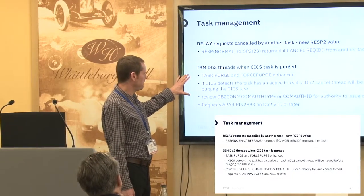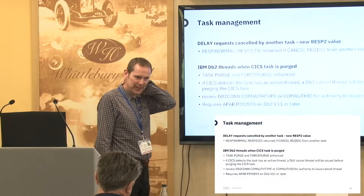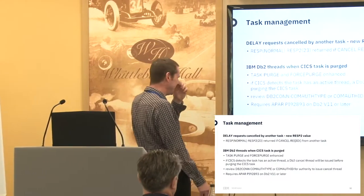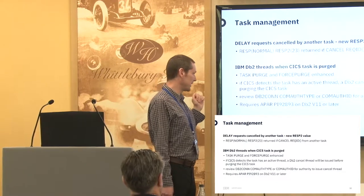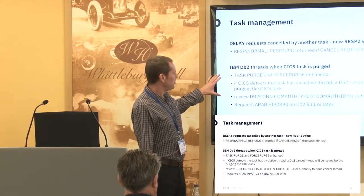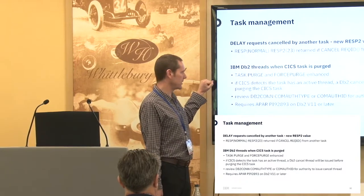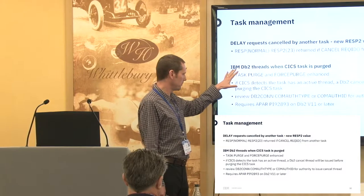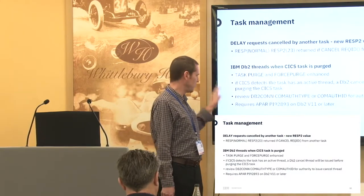Task purge: many of you have been in the position where you've purged a task in CICS and the thread in DB2 was still active, causing problems. Current advice is to cancel the DB2 thread before purging the CICS task — a two-step process involving multiple people. The improvement in 5.5 is for CICS to do the cancel thread for you. CICS will detect if the task is currently active in DB2 and, if so, issue the cancel thread before the purge or force purge. Both CICS and DB2 have been enhanced to support this — it requires maintenance on both sides.